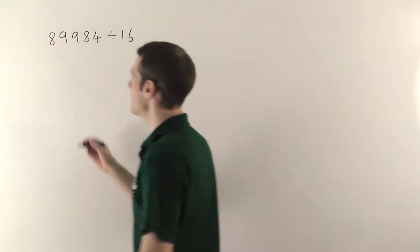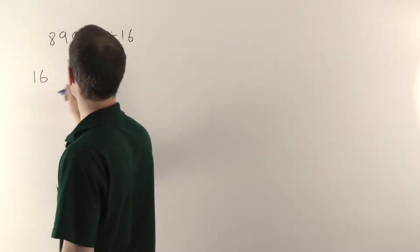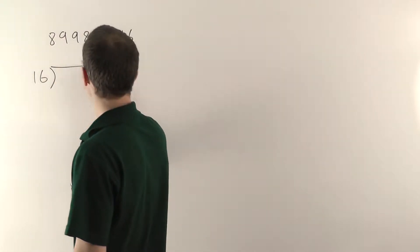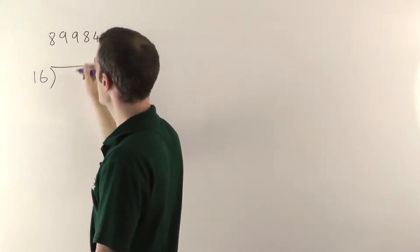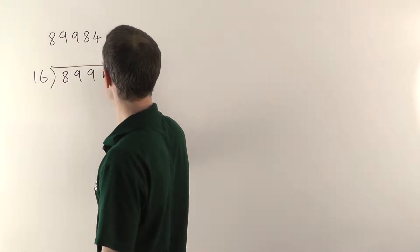So it's the bus stop method again. The smaller number, the 16, goes on the outside. There's my bus stop and the big number sits underneath the bus stop like so.